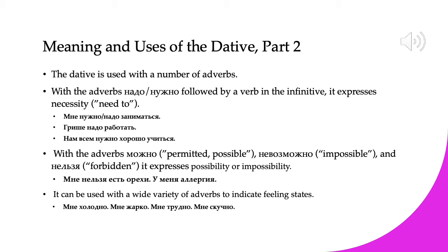The second broad class of usage for the dative is with a number of adverbs. For example, with the adverbs надо or нужно, which with verbs can be used interchangeably and mean 'necessary.' Dative plus надо or нужно plus a verb in the infinitive means 'I have to do something' or 'I need to do something.' For example, мне нужно or мне надо заниматься — I need to study. Грише надо работать — Grishas needs to work. Нам всем нужно хорошо учиться — we all need to do well in school. The person who needs to do something is in the dative, followed by надо or нужно, then the verb in the infinitive.